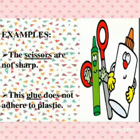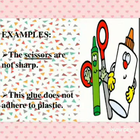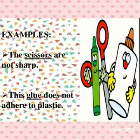All these are non-living things. For example: 'The scissors are not sharp.' 'This glue doesn't adhere to plastic.' So scissors and glue — both are non-living things, so they will come under the neuter gender.